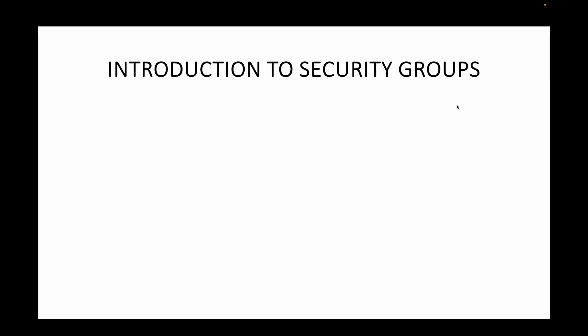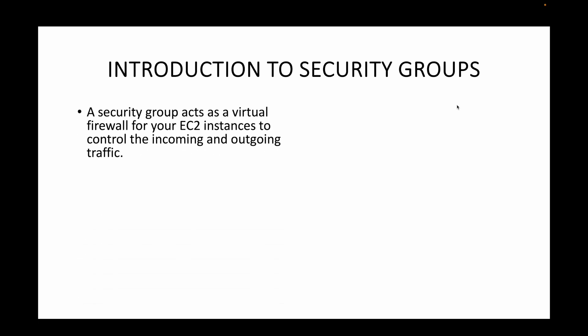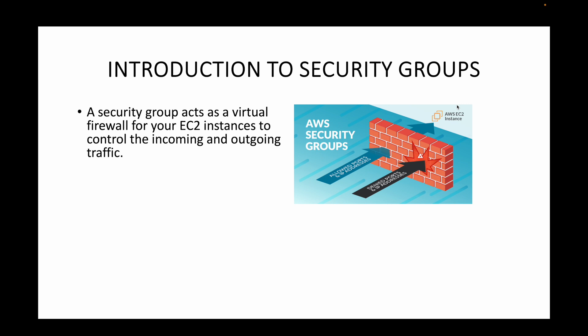Hello and welcome back. In this session we will talk about security groups — an introduction. Security groups are simply your firewalls. Whenever we launch our EC2 instances, we use security groups to control what traffic can come in to the server and what traffic can go out. You can think of it as a main door to control who can get in and out of your house. This acts as a virtual firewall, where you define all the port numbers you want to allow and from where.